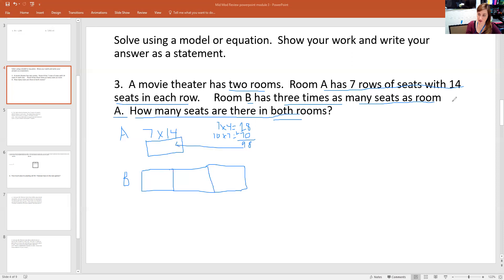And remember room B has three times as many seats as room A. So that's three times as many seats. Three times the 98 that we just figured out for A. You could add all those, but let's just use a standard algorithm and say 98 times three.